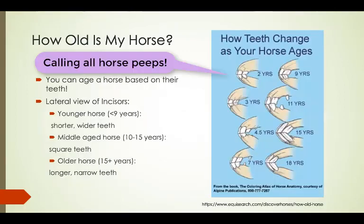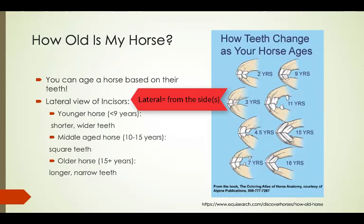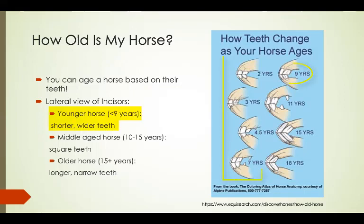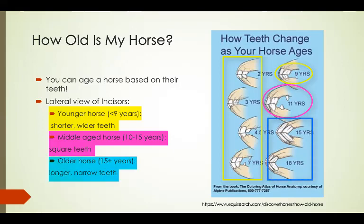If you have a horse, you're already familiar with how a horse can be aged according to their teeth. If you look at the horse's teeth from the lateral view, or from the side, you can determine their age by the shape of the incisors. In general, a younger horse will have shorter, wider teeth; a middle-aged horse will have square-shaped teeth; and an older horse will have longer, narrow teeth.